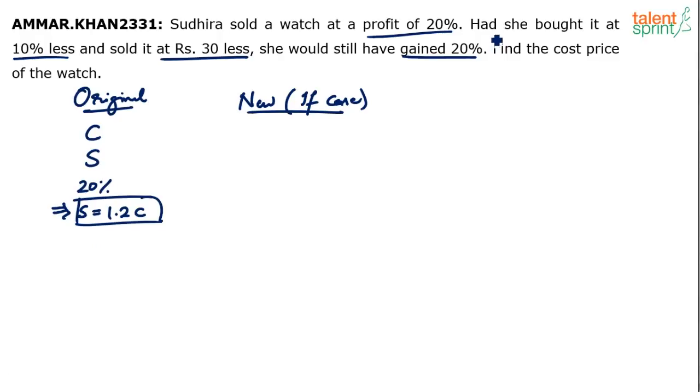What happens in the new case? If she bought it at 10% less, that means the cost price C dash will be 10% less than the original cost price. C minus 10% of C. So C minus 0.1C which is 0.9C. What will new selling price S dash? Sold it at Rs 30 less. New selling price S dash will be original selling price minus 30.